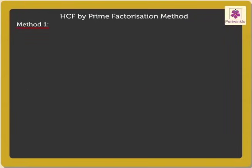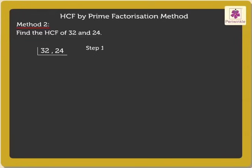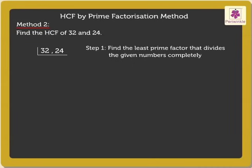Now, let us look at Method 2. Let us find the HCF of 32 and 24 again using this method. Here, we will be finding the Prime Factors of both the numbers together. Step 1: Find the least prime factor that divides the given numbers completely. Begin with the smallest prime number, i.e. 2. As the numbers 32 and 24 are even numbers, they are divisible by 2. So, 32 divided by 2 gives 16, and 24 divided by 2 is equal to 12.